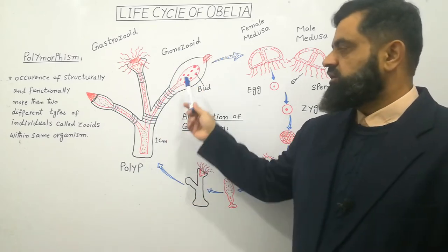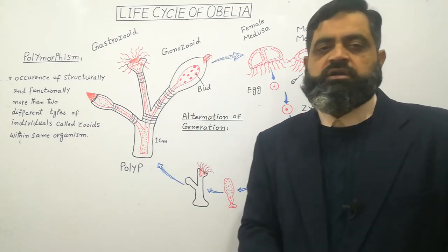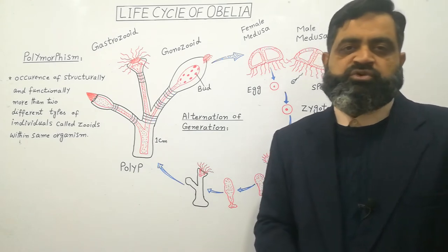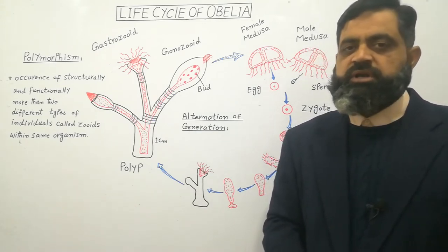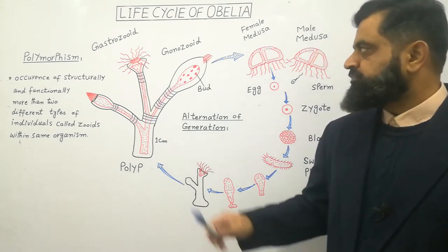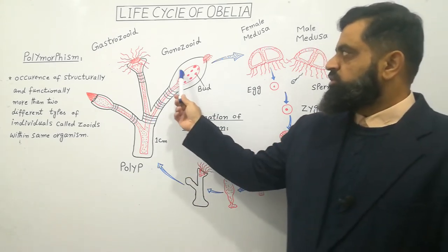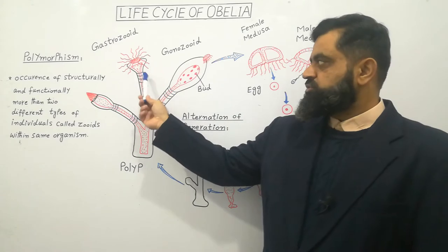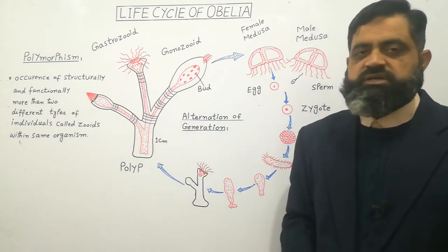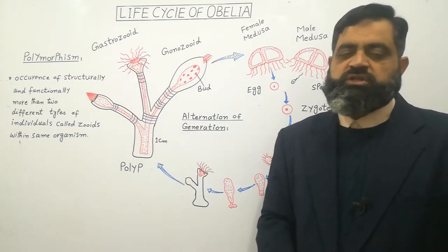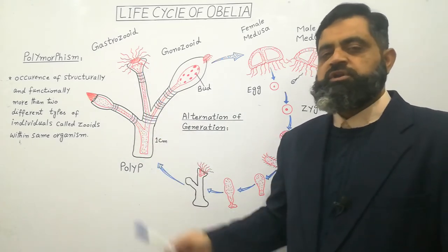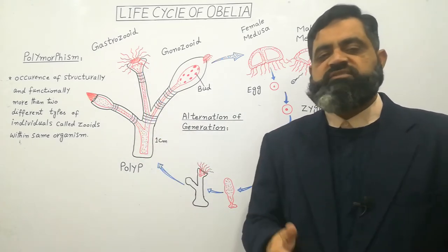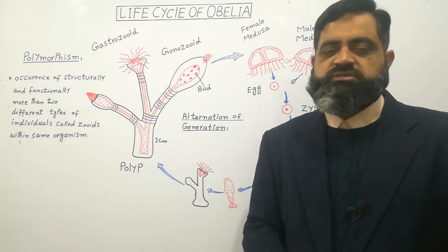The second zooid is known as Gonozoid. Gonozoids are responsible for asexual reproduction by budding. Both Gonozoids and Gastrozoids are present in the same colony. This colony may be 1 cm to several cm long.